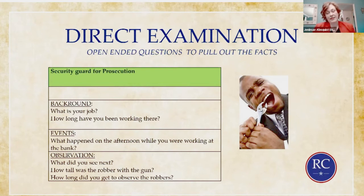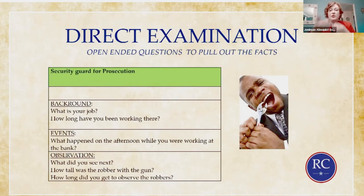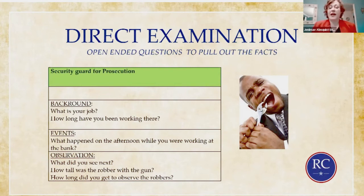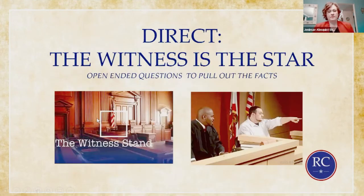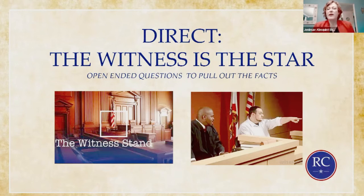Think about the observations of the witness — what they could see. Ask things like: 'What did you see next?' 'How tall was the robber with the gun?' 'How long did you get to observe the robbers?' You want to give the witness credibility by giving them a chance to tell a story to the jury. When it's your favorable witness, you want the jury watching and learning to trust the witness — not looking at you. That's why your questions are open-ended, so the witness is doing most of the talking.